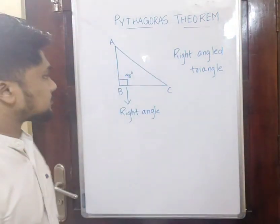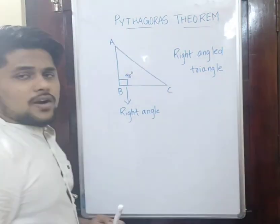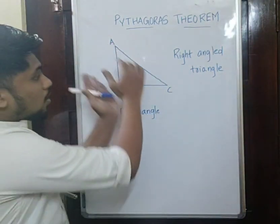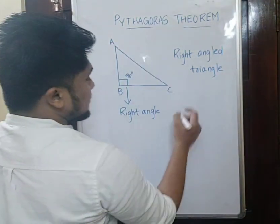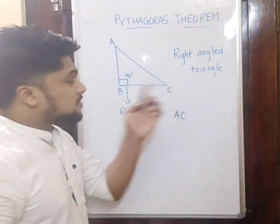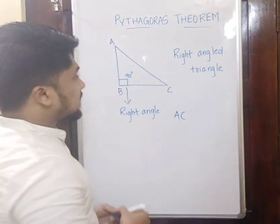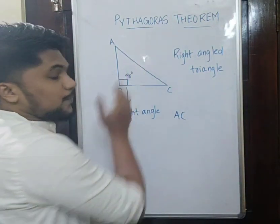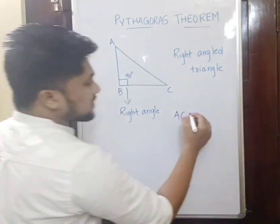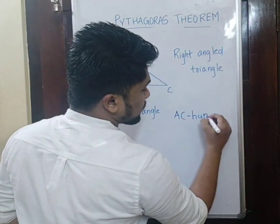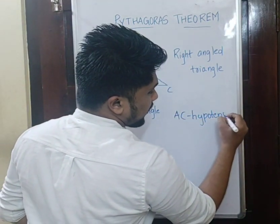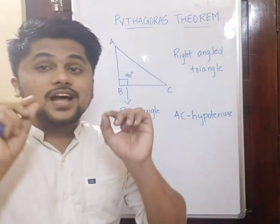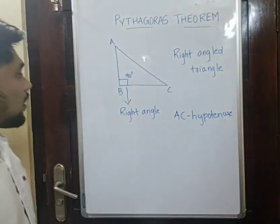Now let's discuss which one is the longest side in this triangle. The longest side in this triangle is AC. The largest side is nothing but AC, which is exactly opposite to B — that is the right angle. We call this the hypotenuse. This is the largest side.